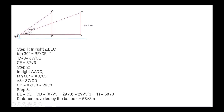In triangle BEC: tan 30° = BE/CE, so 1/√3 = 87/CE, giving CE = 87√3. In triangle ADC: tan 60° = AD/CD, so √3 = 87/CD, giving CD = 87/√3 = 29√3. Distance traveled = CE − CD = 87√3 − 29√3 = 58√3 meters.